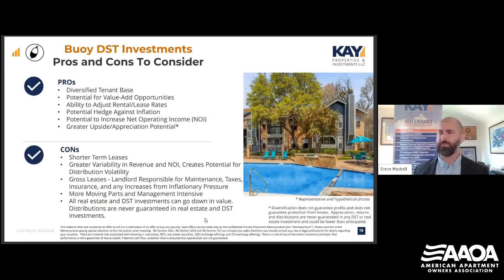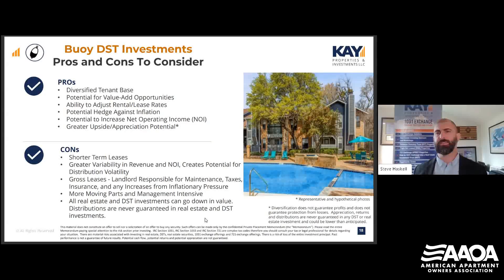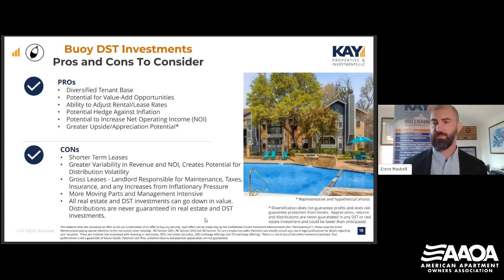Some cons of buoys: shorter-term leases create greater variability in revenue and net operating income, which creates volatility in your distributions. Gross leases mean the landlord is responsible for maintenance, taxes, insurance, and inflationary cost increases — especially with insurances skyrocketing. We've also had properties where a nearby sale caused the county to reassess and crank up property taxes dramatically, even though our rents hadn't increased proportionally. Big sponsors have lawyers to fight that with municipalities, but it's a challenge. And always keep in mind: it's real estate — values can go down, the DST does not shelter the real estate from economic conditions, and distributions are never guaranteed.